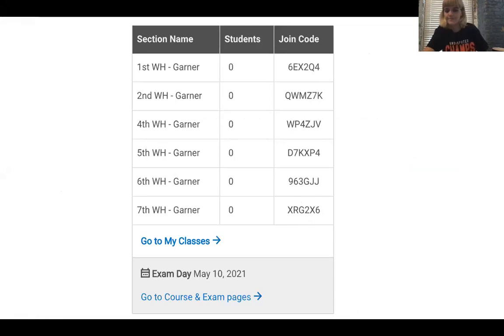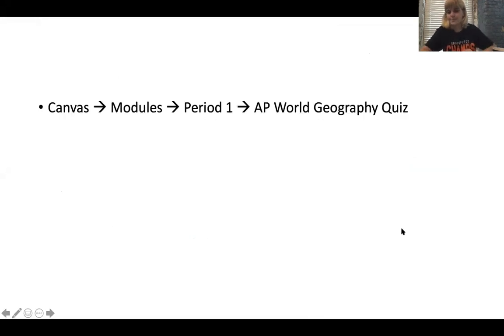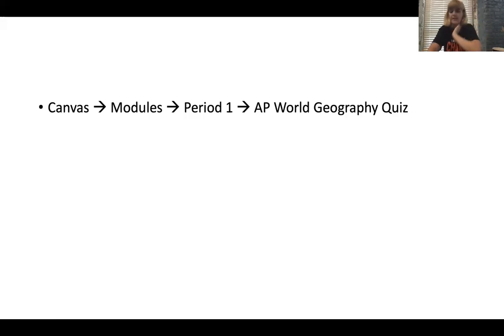Last but not least, and this should take you about five minutes: go on to Canvas, go to Modules, go to Period 1, and take the AP World Geography quiz. You can take it as many times as you want until you get a hundred. If you have any questions, feel free to email me. Tomorrow we will finish up China. Keep fighting, keep studying, and stay awesome. You guys have a good rest of your day.